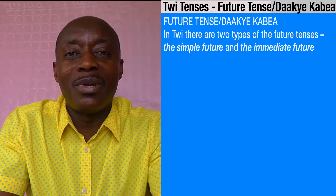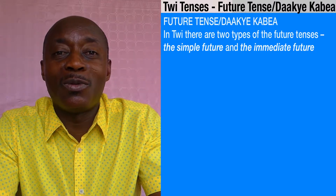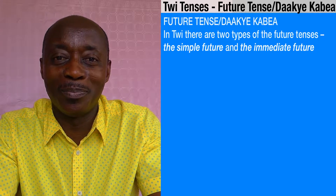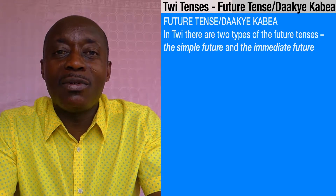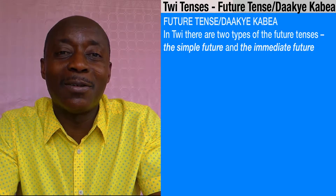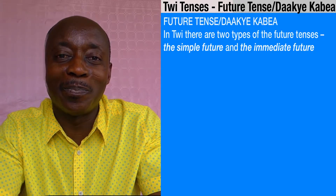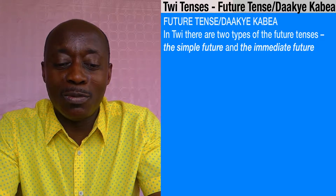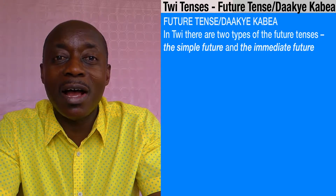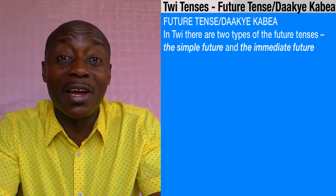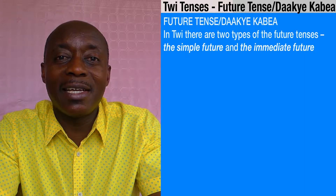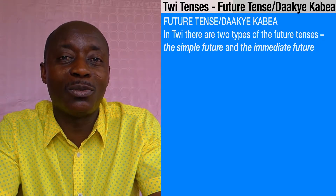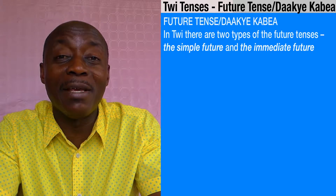With the simple future in Twi, it's a tense that tells you that something is going to happen later on, but it doesn't give you the impression that it's going to happen very soon. However, with the immediate future, that one tells you that something is going to be done later on, but it will be done very soon. For example, if I say 'I'll go to Hamburg,' it's not something that is going to be done right now. But if I say 'I'm about to go to Hamburg,' this gives you the impression that very soon I'll be going to Hamburg — that is what you call the immediate future.